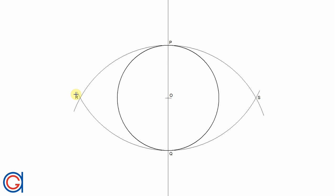So now we are going to join R to S going through the origin O and this will cut our circumference at two new points which we will call T and U.